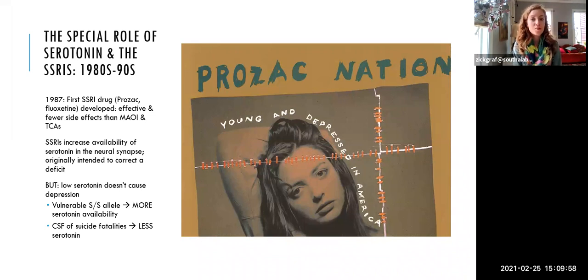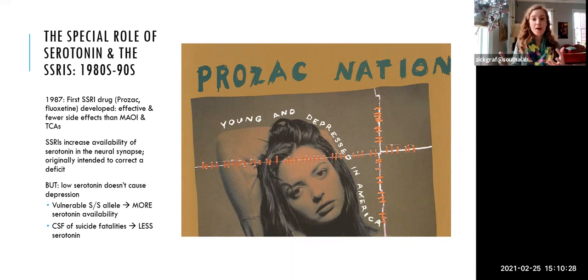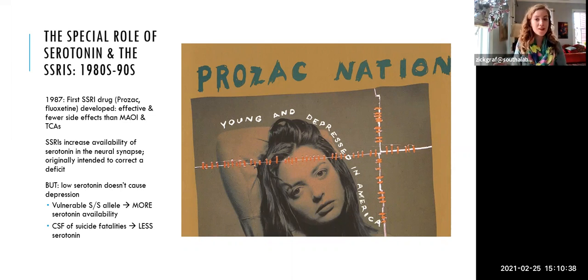On the other hand, there is some evidence that some people with severe depression or who've completed suicide do have less serotonin. Studies of the cerebrospinal fluid of people who had completed suicide found that the more suicide attempts someone had — an indicator of chronicity and severity — the lower their levels of serotonin were. So there's conflicting evidence: drugs that raise serotonin seem to improve depression, but the genotype that also raises serotonin makes someone more vulnerable to depression. And while there's no blood test for low monoamines, on autopsy, people who are severely depressed and who complete suicide do tend to have lower serotonin.